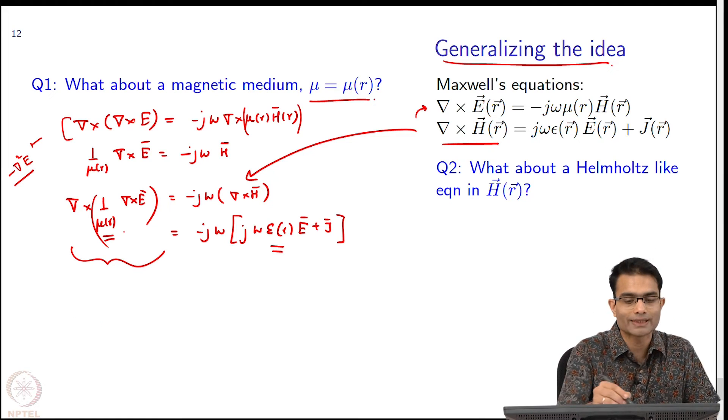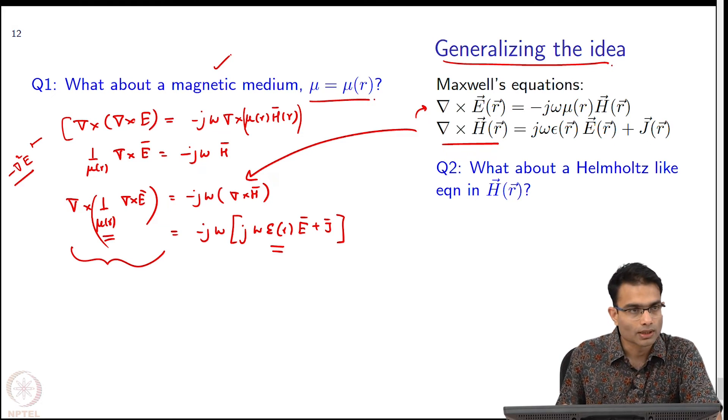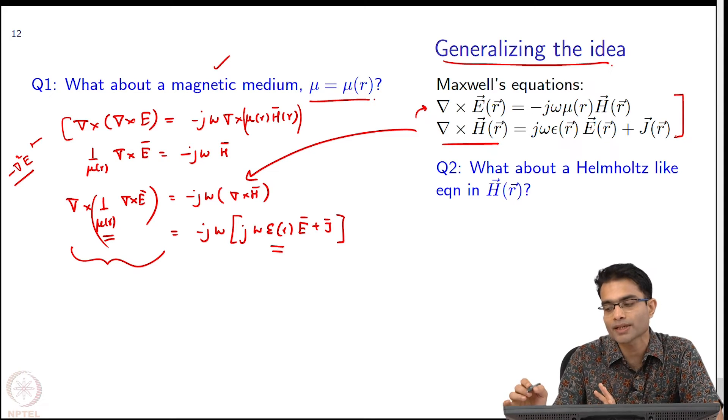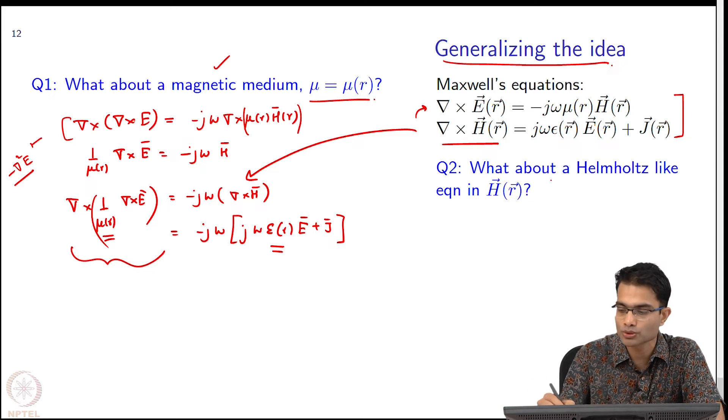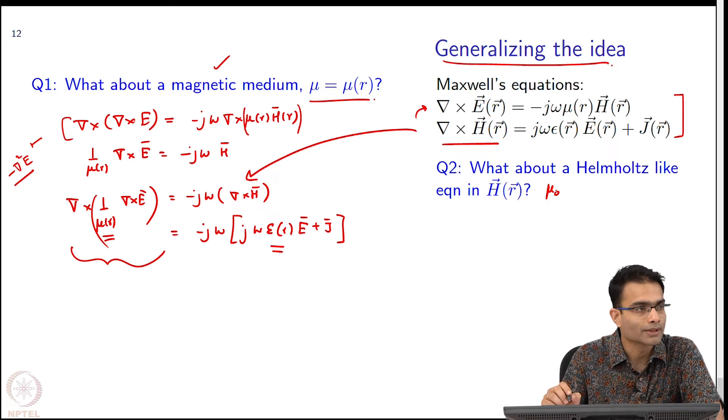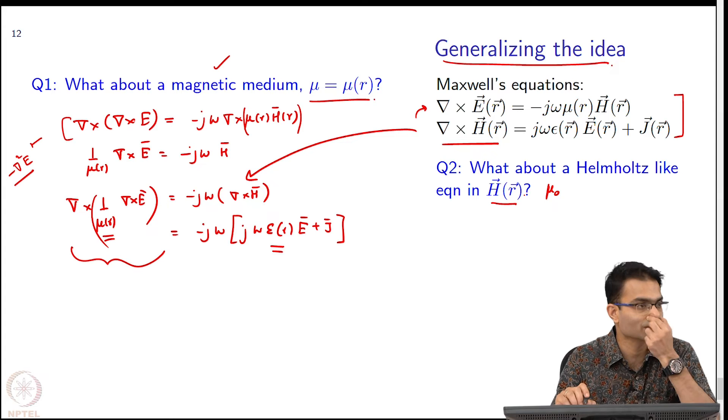So, that is how we will deal with a magnetic medium. Now what we did was we took these equations, let us assume that we do not have a magnetic medium, let us assume that I have just mu naught. We formed an equation, the Helmholtz or the wave equation only in E. Can I do the same thing in H? Can I form a del squared H term?